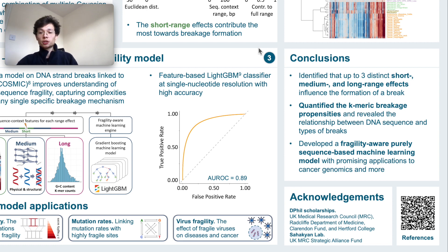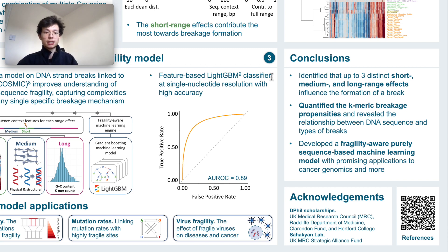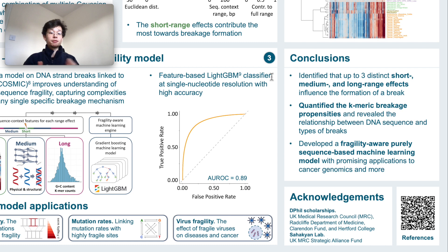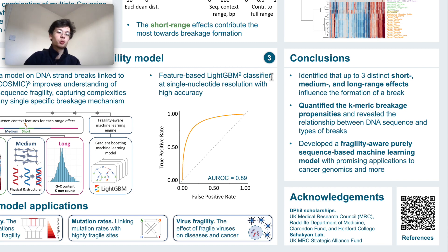Just to conclude the work so far: we've identified up to three distinct ranges of influence — short, medium, and long range — that all influence the formation of a break. If we zoom into the short range, we can quantify which sequences are more likely to break than others. We can use all of this information to develop a purely sequence-based, fragility-aware machine learning model, with hopefully some promising applications to cancer genomics and more.